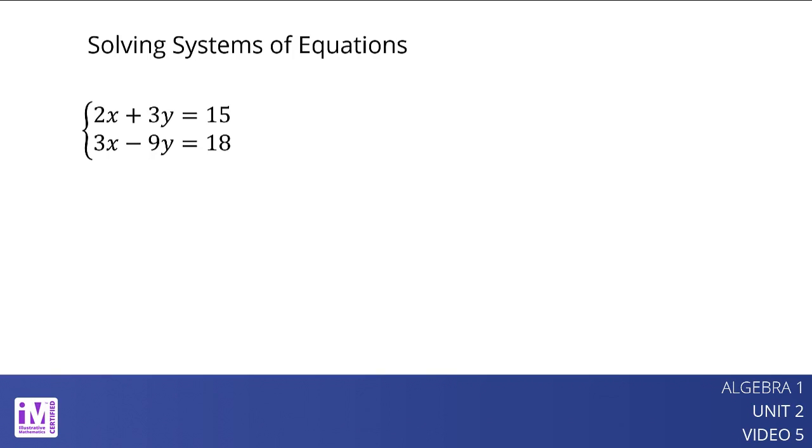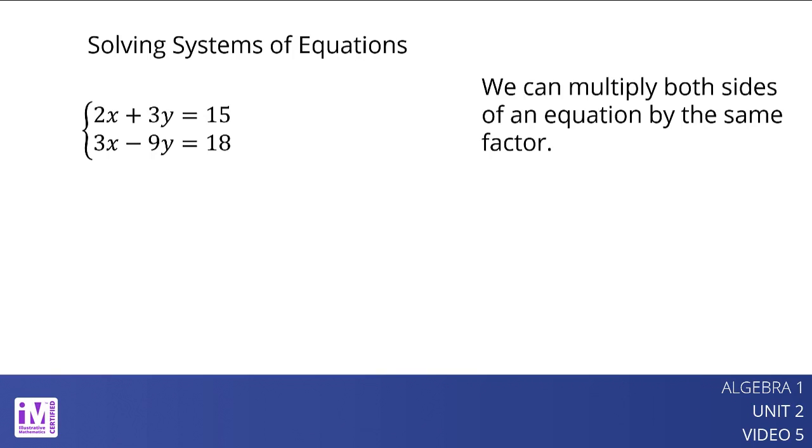To solve this system by elimination, we first need to rewrite one or both equations, so that one variable can be eliminated. To do that, we can multiply both sides of an equation by the same factor. Remember that doing this creates an equivalent equation, so the x and y values that make the first equation true also make the new equation true.